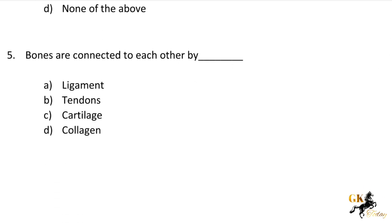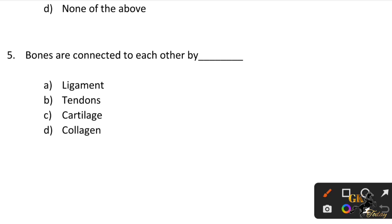Next question: Bones are connected to each other by — Option A: Ligament. Option B: Tendons. Option C: Cartilage. Option D: Collagen. The correct answer is Option A: Ligament.